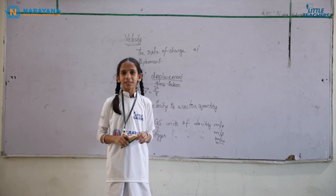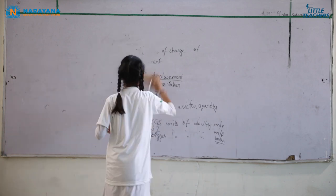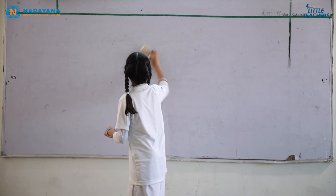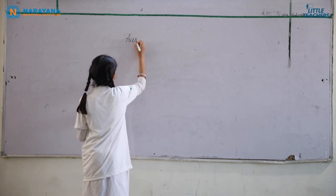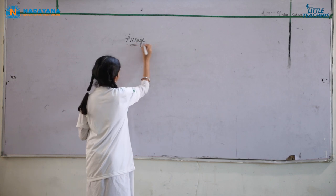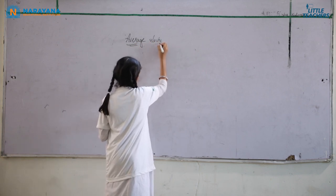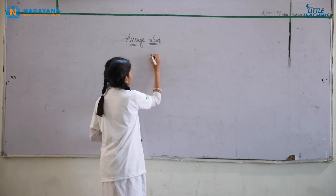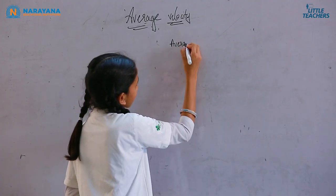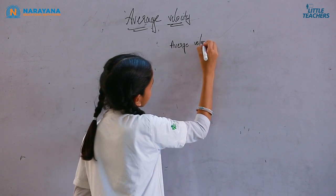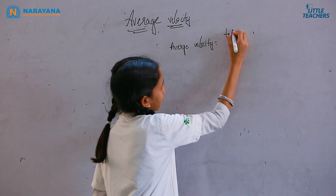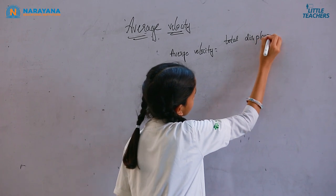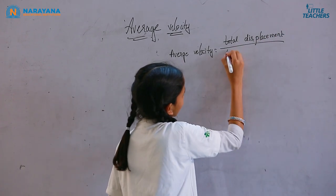Now I am going to discuss about average velocity and an example of that. Average velocity is the ratio of total displacement to total time taken.